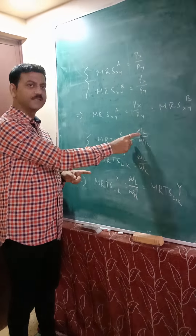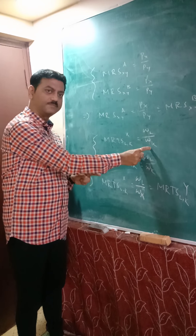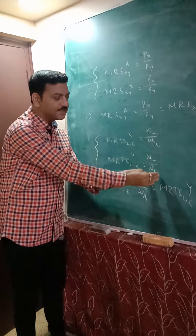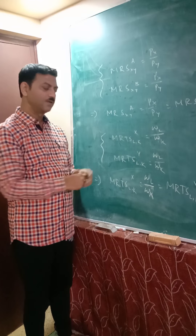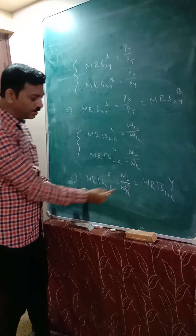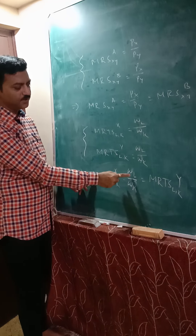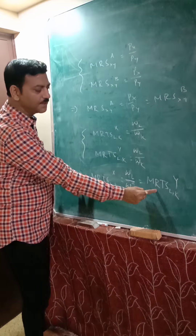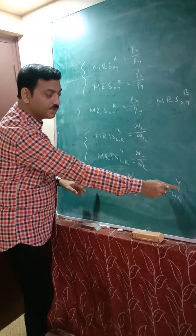WL is the price of labor and WK is the price of capital. Industry Y is also facing the same factor price ratio. From this we get that MRTS of labor and capital for industry X equals WL/WK, and MRTS of labor and capital for industry Y also equals WL/WK. This is the production optimality condition.